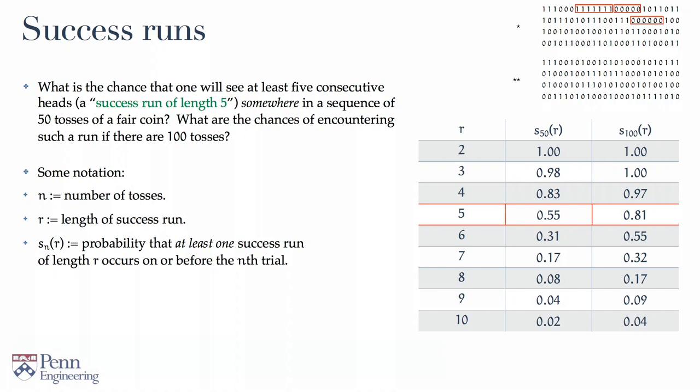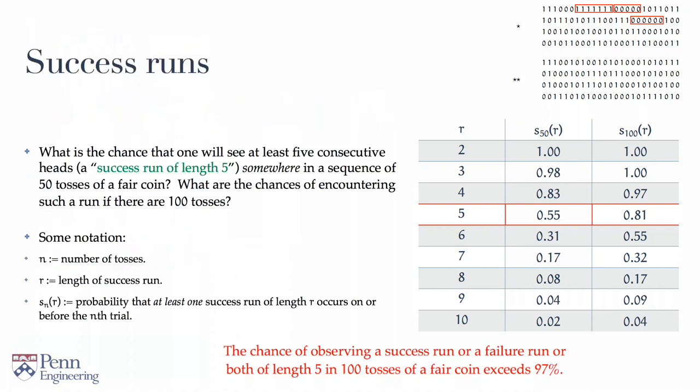Now, with these numbers as background, it should not come as a shock to a student that if we look for either a success run or a failure run, then the probabilities are going to be quite large. Here, for example, the chance of observing either a success run or a failure run, or both, of length 5, in a sequence of 100 tosses, clocks in at an amazing 97%.